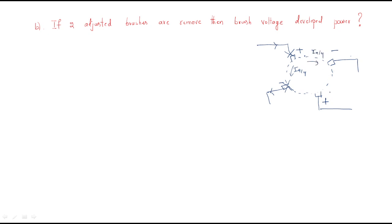For the active remaining brushes: positive will supply and negative will take Ia/4 each. Since both removed brushes are open, there is no current coming from those positions — that current becomes zero. There is no path for that current, so each open brush contributes zero current. Only the remaining brushes supply Ia/4.